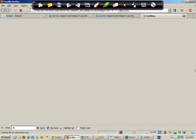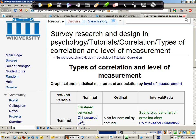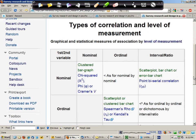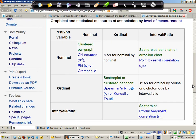By clicking on this link, we get a page which has a table that explains the relationship between levels of measurement and the different types of graphical and descriptive correlation options.